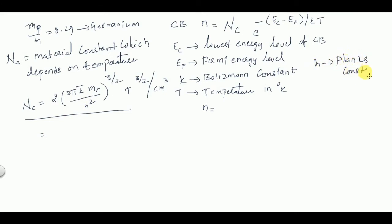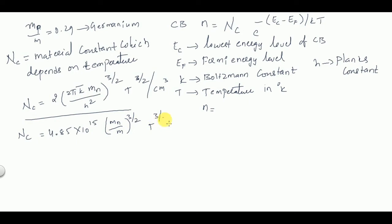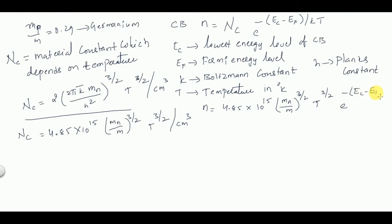If you substitute all these values and express NC in terms of effective mass, you get: NC = 4.85 × 10¹⁵ × (mn/m)^(3/2) × T^(3/2) per cubic centimeter. Therefore, n = 4.85 × 10¹⁵ × (mn/m)^(3/2) × T^(3/2) × exp(−(EC − EF) / kT). This is the concentration of electrons in the conduction band.